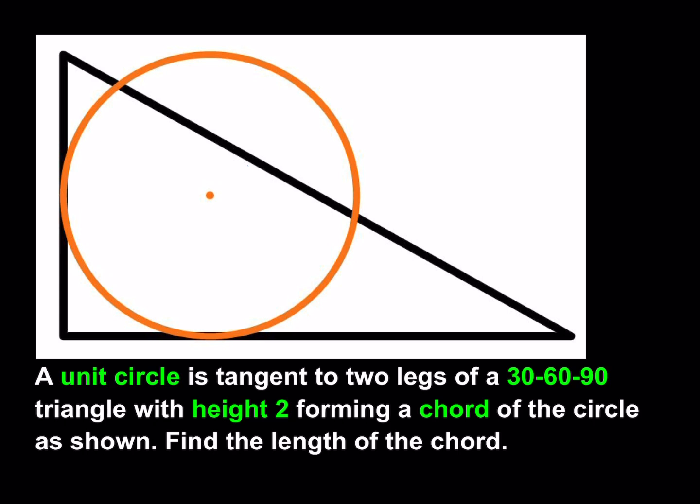We have a unit circle that is tangent to two of the legs — so it's not completely inscribed, but tangent to two of the sides from inside. This is a 30-60-90 triangle with height two, so the height of the triangle is two, and the circle is a unit circle, which means its radius is one. The circle and the hypotenuse intersect, forming a chord, and we're supposed to find the length of that chord.